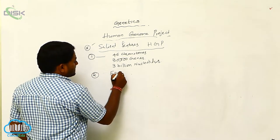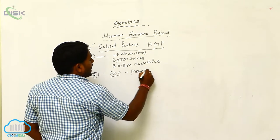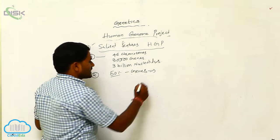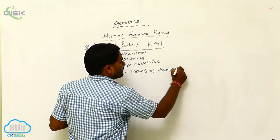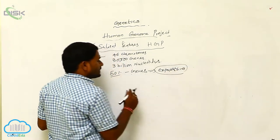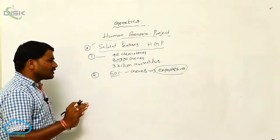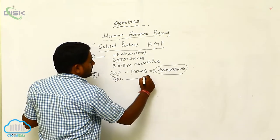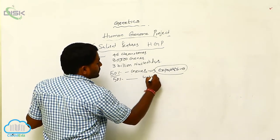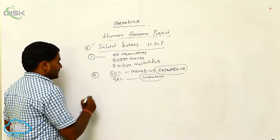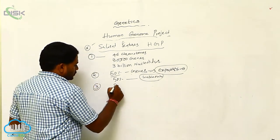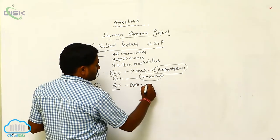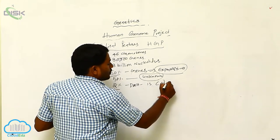Only 50% of the genes are expressing their characters. 50% of the genes have unknown function — we cannot say they are not expressing any character, their function is simply unknown. Only 2% of the DNA is coding DNA.